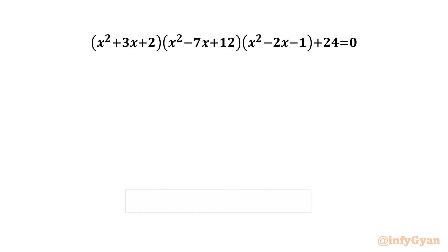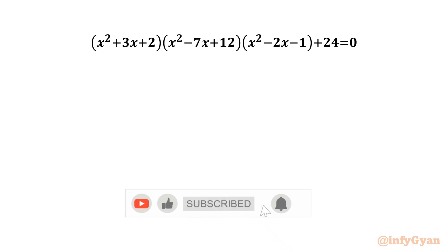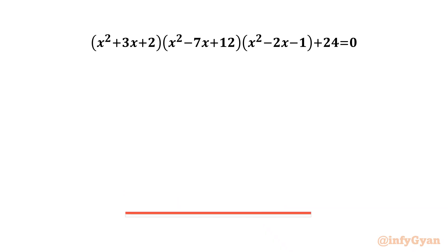Welcome to Infigyan. Today in this video we have a very interesting question from algebra. We have to find all possible 6 real solutions of the hexic equation (x²+3x+2)(x²-7x+12)(x²-2x-1) + 24 = 0, where x belongs to real numbers.